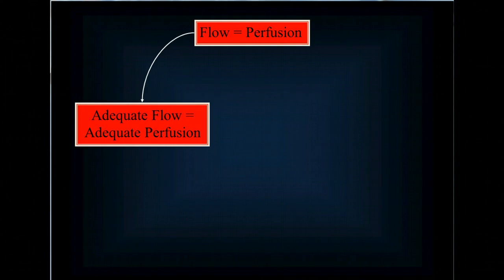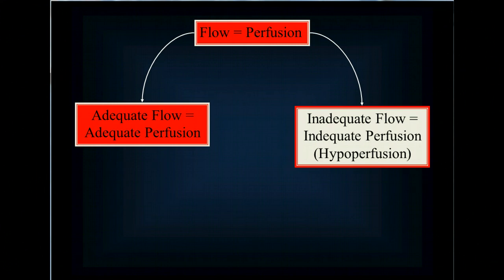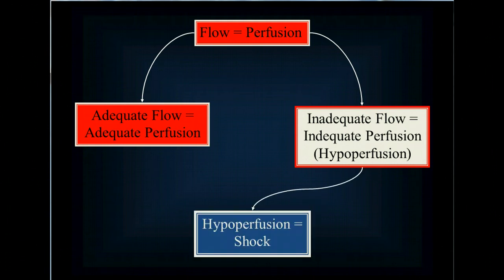Blood flow essentially equals perfusion in this model. If you don't have enough oxygen or glucose in the blood, we can account for that separately, but for most models of shock, flow is perfusion. If you've got adequate flow, you've got adequate perfusion. If you have inadequate flow, you have inadequate perfusion — or hypoperfusion of the end organs — and that is shock.